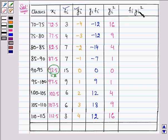Now we need to multiply Fi with Yi square, and on doing so we have 48, that is 3 into 16, 4 into 9 giving us 36, 7 into 4, 28, 7 into 1, 7, 15 into 0, 0, 9 into 1, 9, 24, 9 into 6 giving us 54, and 3 into 16 giving us 48.